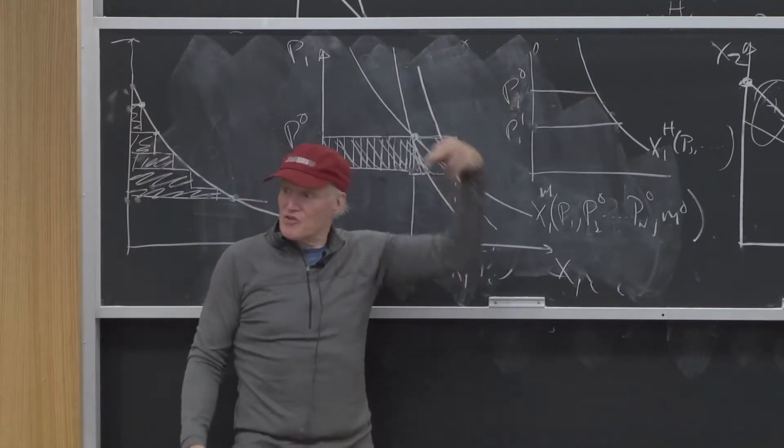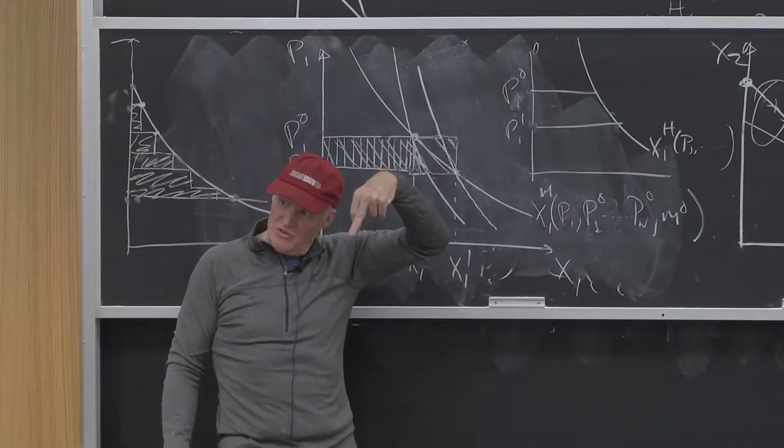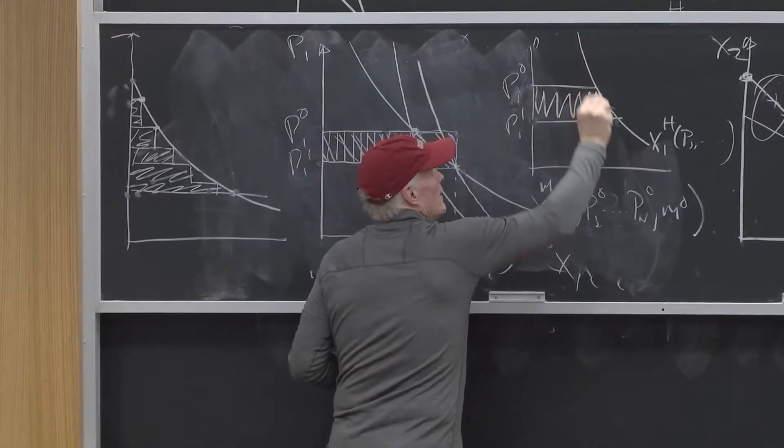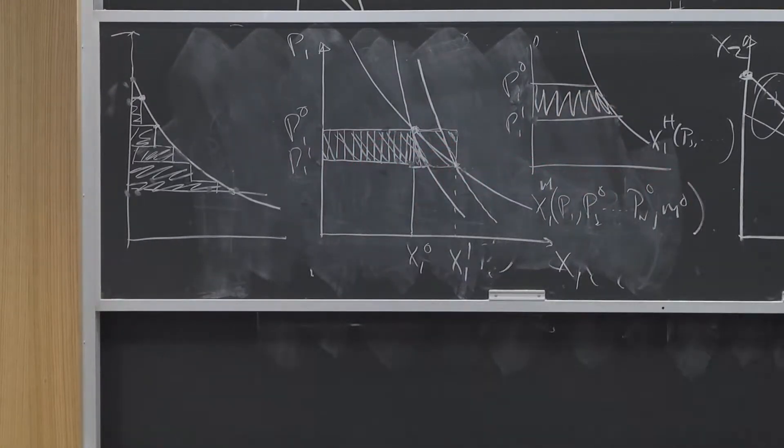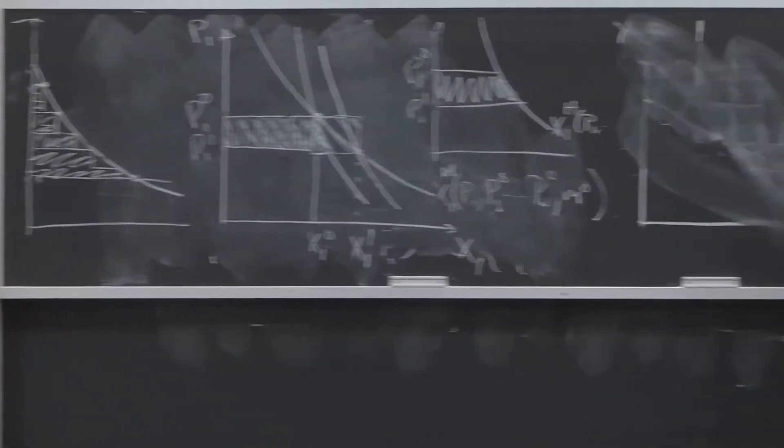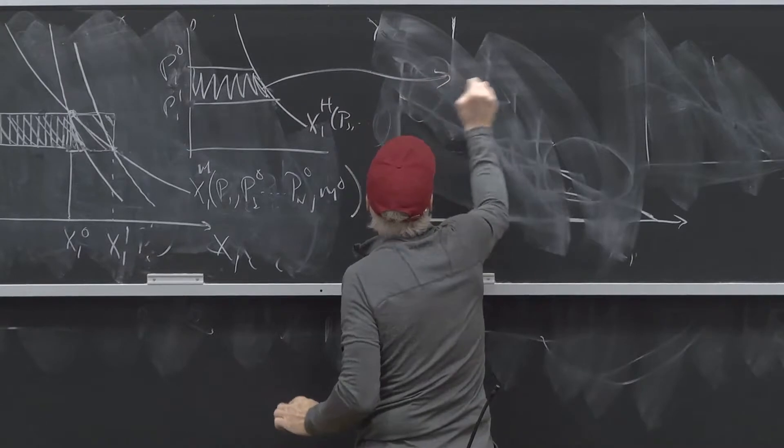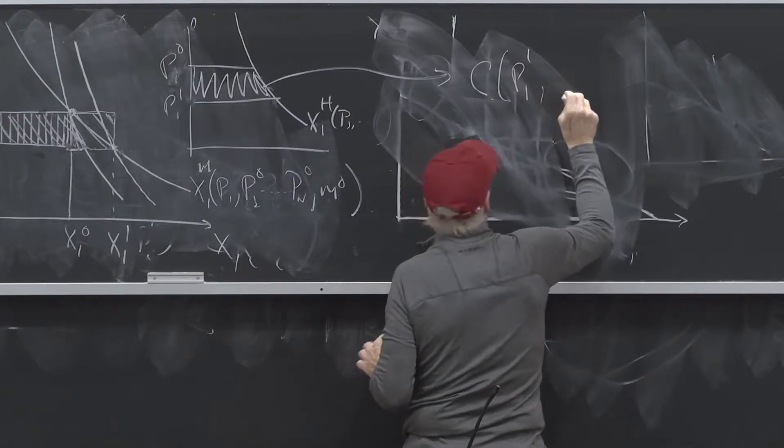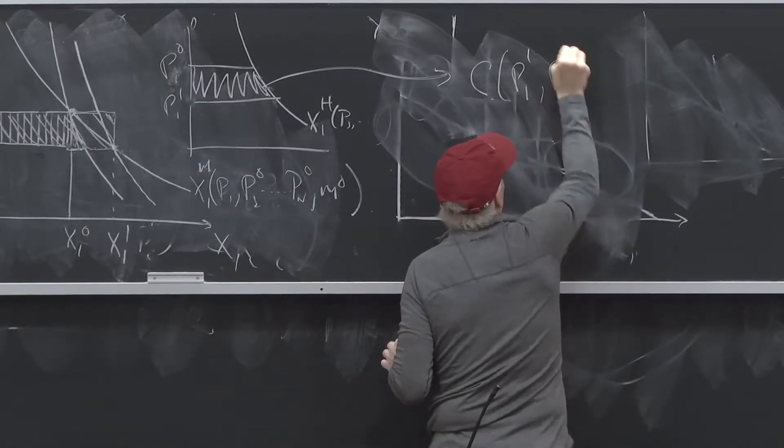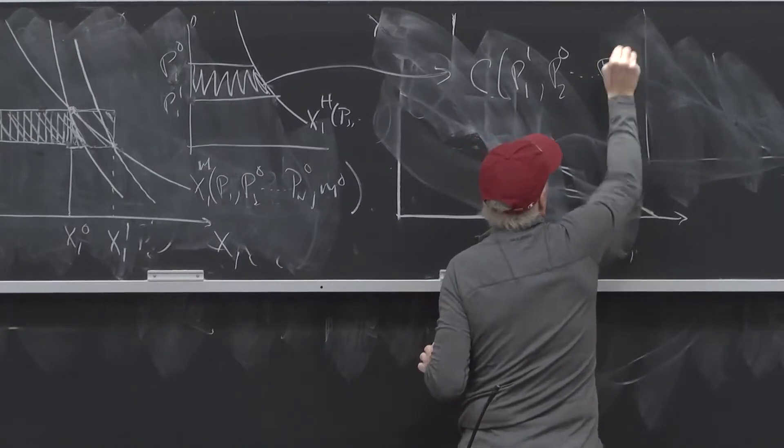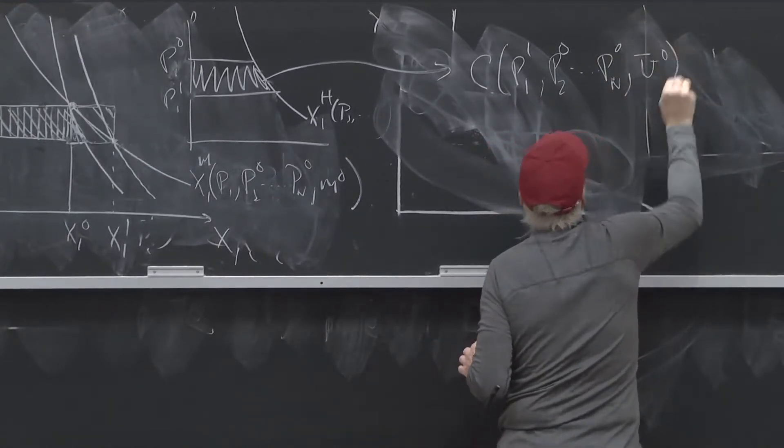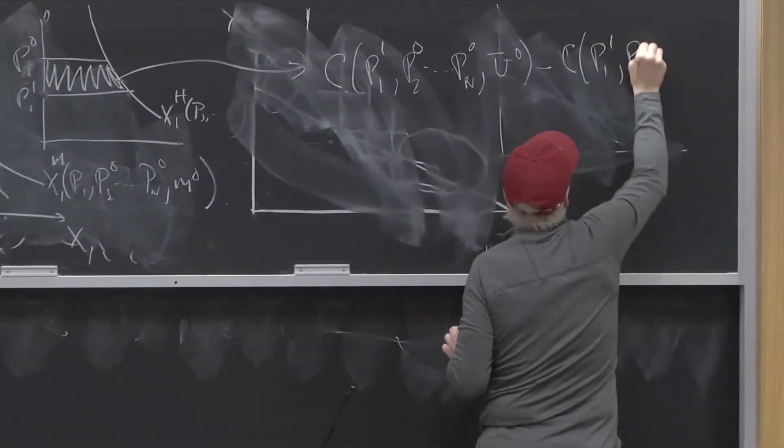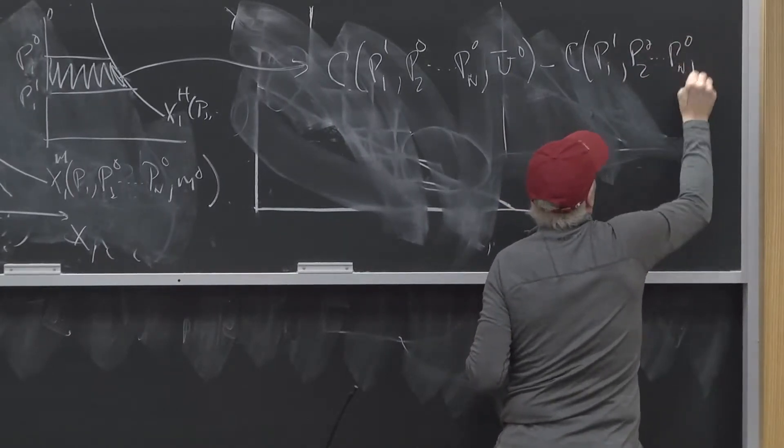So the integral of the derivative of a function is just the function evaluated at the two ends. So this area would be C of P1,1, P2,0 to PN,0, U0, minus C P1,0, P2,0 to PN,0, U0.